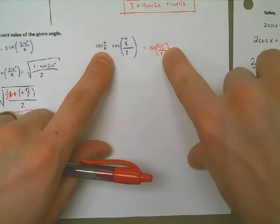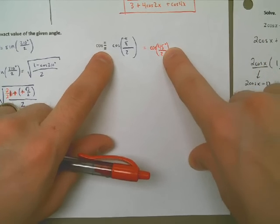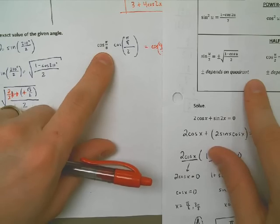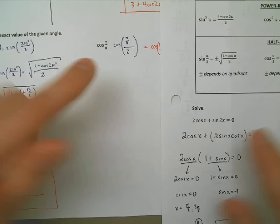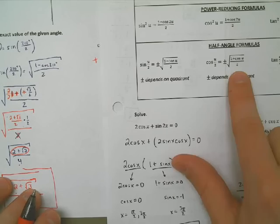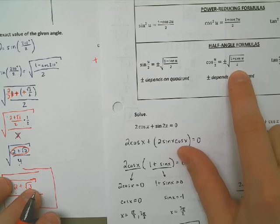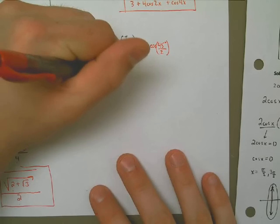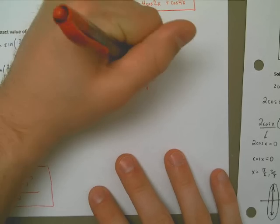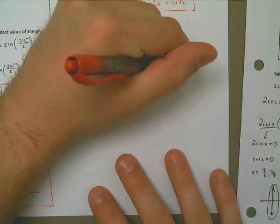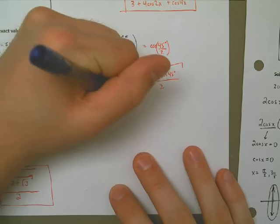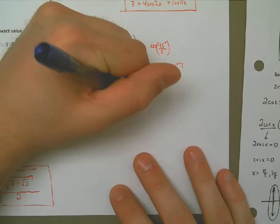The cosine half-angle formula is almost exactly the same as the sine one, except it uses 1 plus cosine u over 2. So the cosine of 22.5 degrees equals the square root of 1 plus the cosine of 45 degrees, all over 2. The cosine of 45 degrees is 1 over square root of 2, which I'll write as the square root of 2 over 2. That whole thing is over 2, and everything is inside the square root.